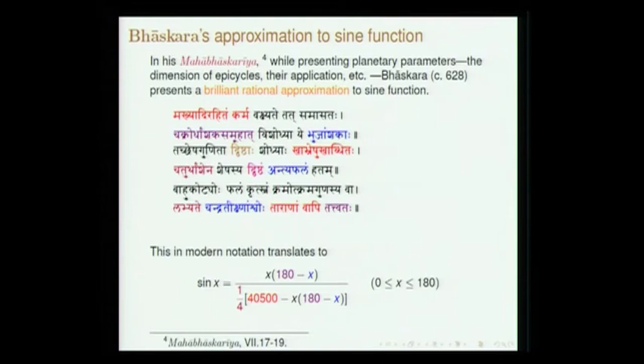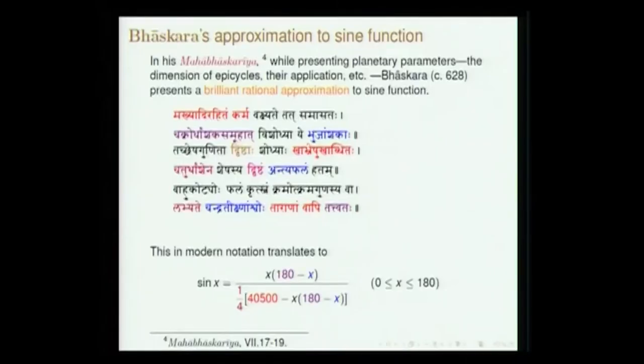One comes to understand this from two factors. First, this verse is present in two of his works: the Aryabhatiya Bhashya, where he explains it saying one can do computation without employing the table, and there is a hint that Aryabhata himself might have known it. Second, in his own work Mahabhaskariya, when he presents this verse, it is presented as if it is quite well known — not as something new. So it appears this approximation might have been available even during Aryabhata's period, and one is not very sure whether this is Bhaskara's invention at all.